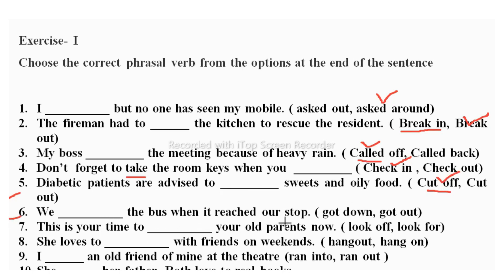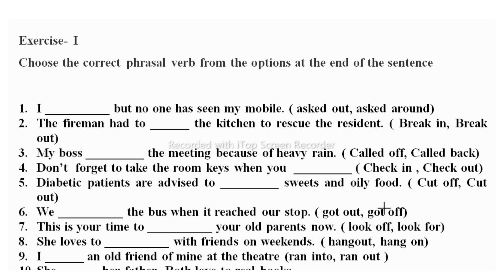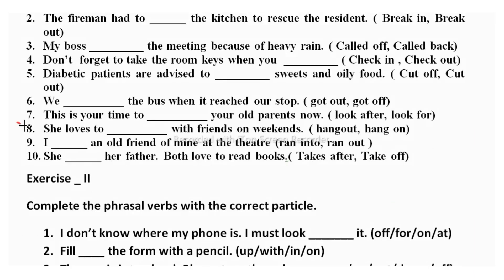Sixth sentence: 'We dashed the bus when it reached our stop.' Options are 'got down' or 'got off.' 'Got off' means getting down from a vehicle. When we reach our stop we get off, so the correct answer is 'got off.'